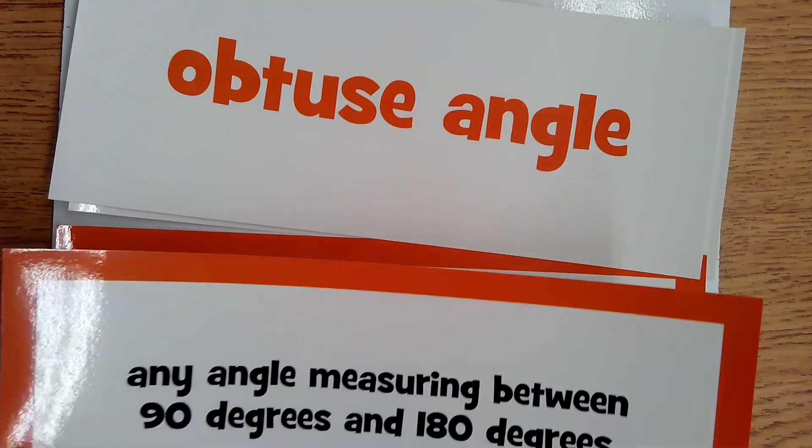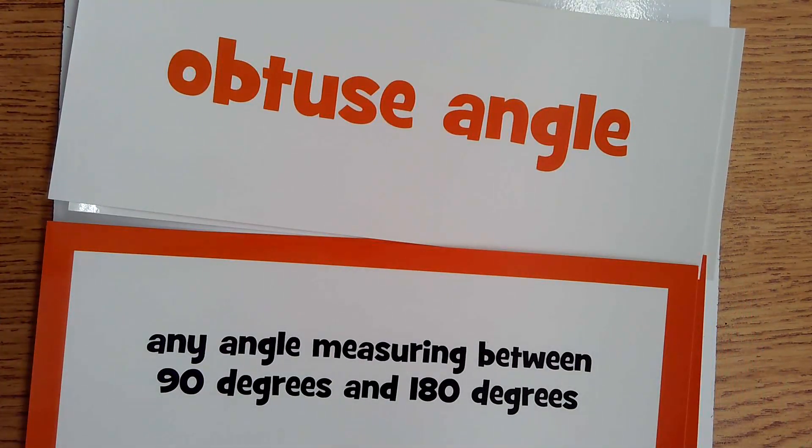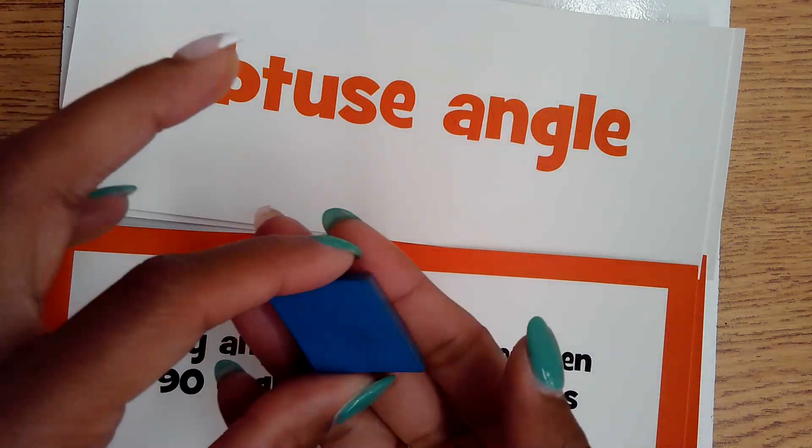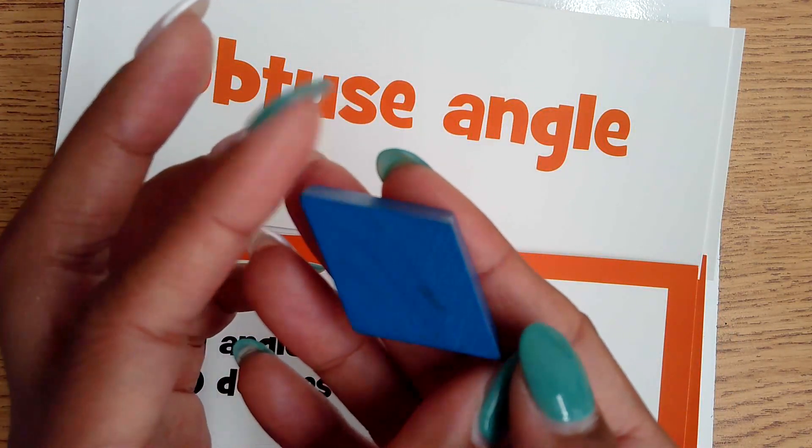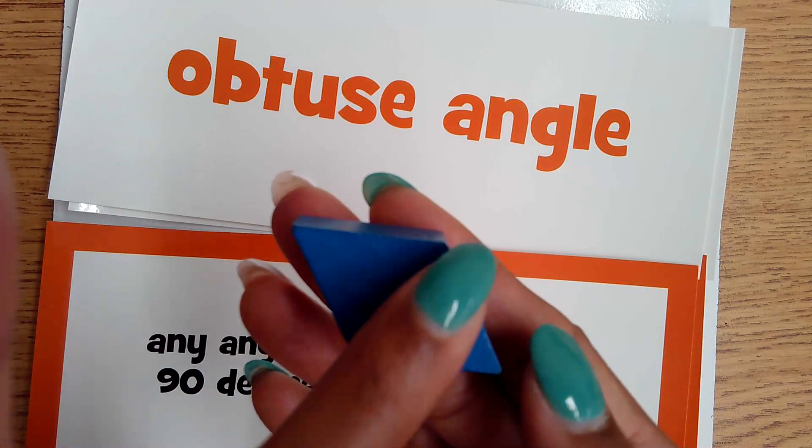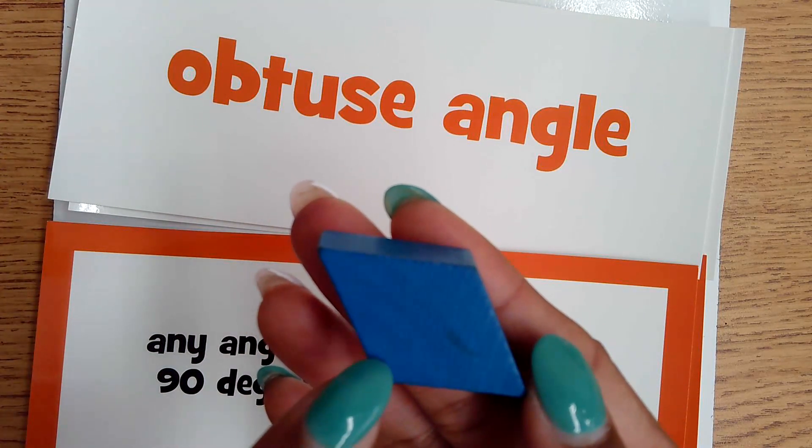An obtuse angle is any angle measuring between 90 degrees and 180 degrees. So we want it to be bigger than that corner, that 90 degree angle, but not exactly a straight line. Again, we can use the same shape we just looked at, and we have these two opposite angles now. I know I have my corner, my benchmark, that would be 90 degrees.